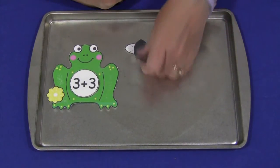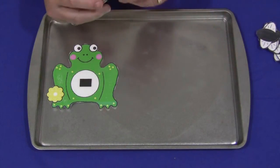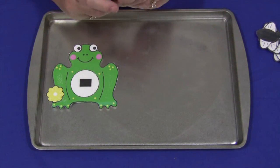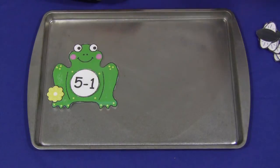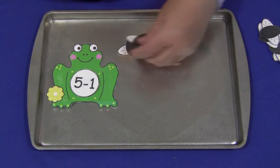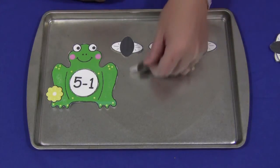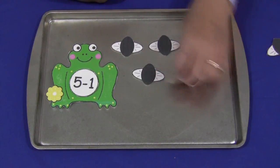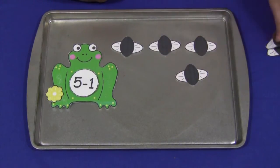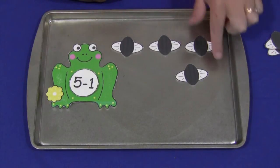You could also make a subtraction equation. You could do maybe five minus one. So you would start with five flies out, and then you would take away one fly, and that would leave you with one, two, three, four.